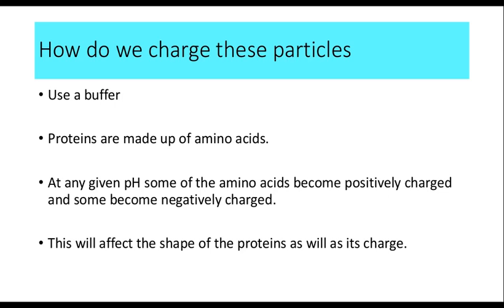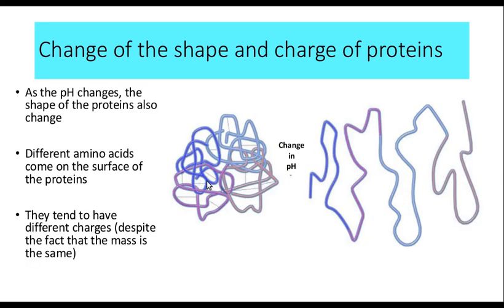Not only will the pH of the buffer affect the charge of the proteins, it will also affect the shape of the proteins. When the pH changes, the protein's structure also changes. As the structure changes, amino acids that were inside come to the surface. So as pH changes, two things change: the charge of the protein and the shape of the protein. What does not change is the mass of the protein. So if I perform electrophoresis at different pH values, the protein's mass stays the same, but its shape and charge both change.